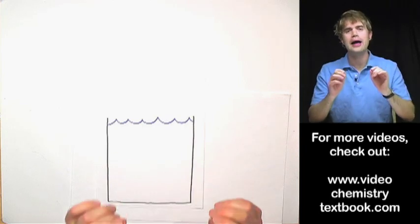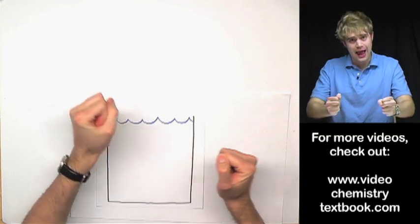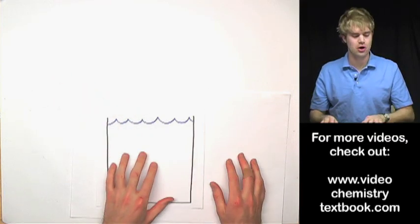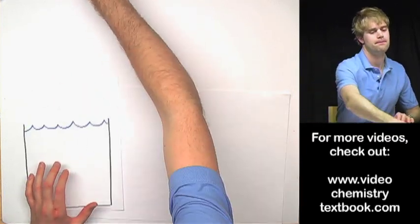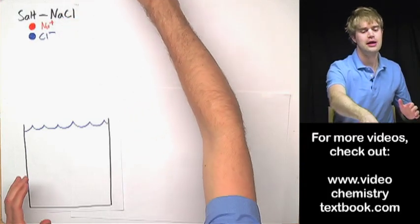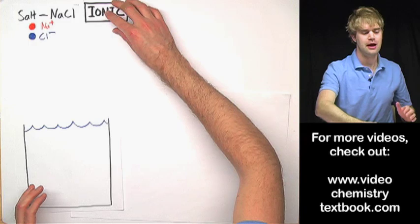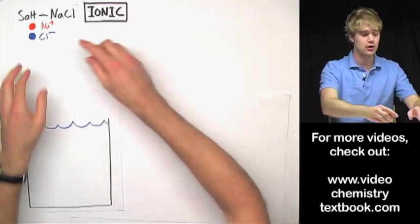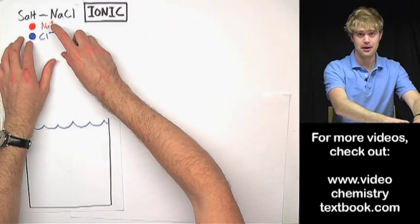But it's only ionic compounds that have their atoms come apart when they dissolve. Here's an example. So sodium chloride, also known as table salt, is an ionic compound. And that's because it's made of a metal, sodium, and a non-metal, chlorine.